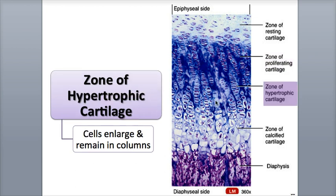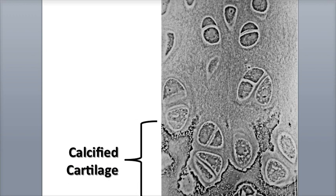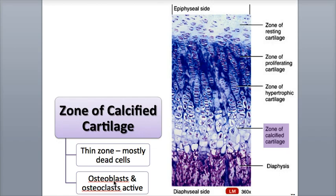In the zone of hypertrophic cartilage, we see larger cells — mature chondrocytes that are still appearing column-like and are no longer dividing. In the final zone of calcified cartilage, we see thin layers of mostly dead chondrocytes due to the surrounding calcified extracellular matrix. This area is actively worked upon by osteoclasts that break down this calcified cartilage. Osteoblasts also move into the region to produce new bone matrix through endochondral ossification, and new blood vessels arrive into the area. This zone is on its way to becoming the new diaphysis that becomes part of the existing diaphysis of the bone.